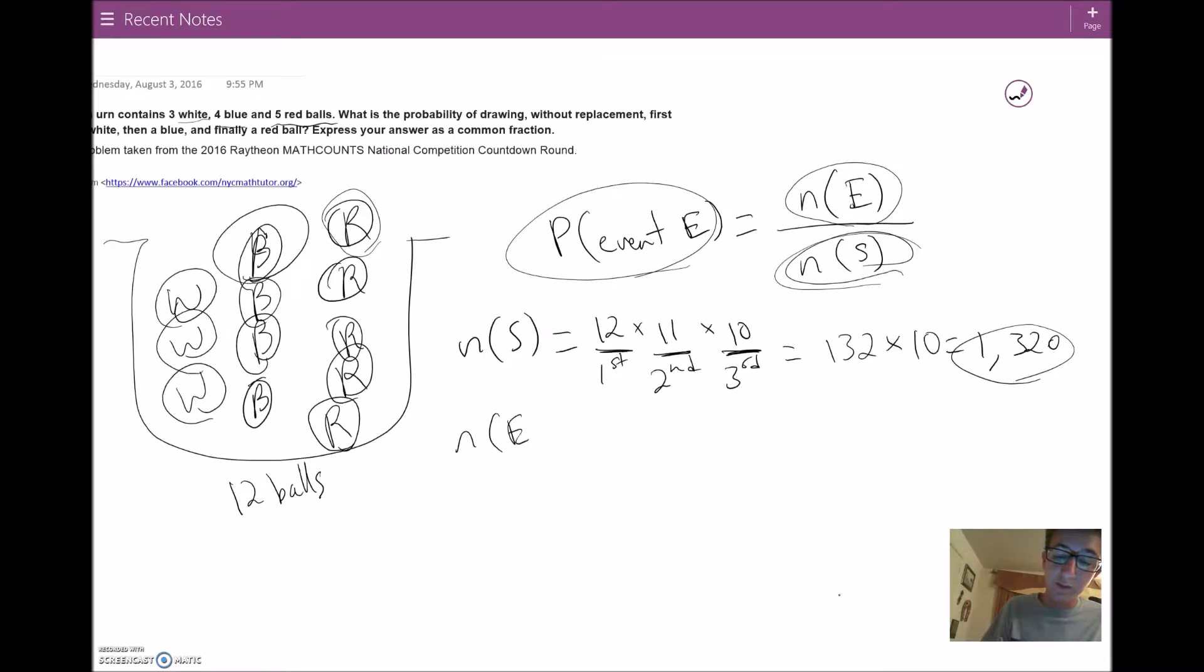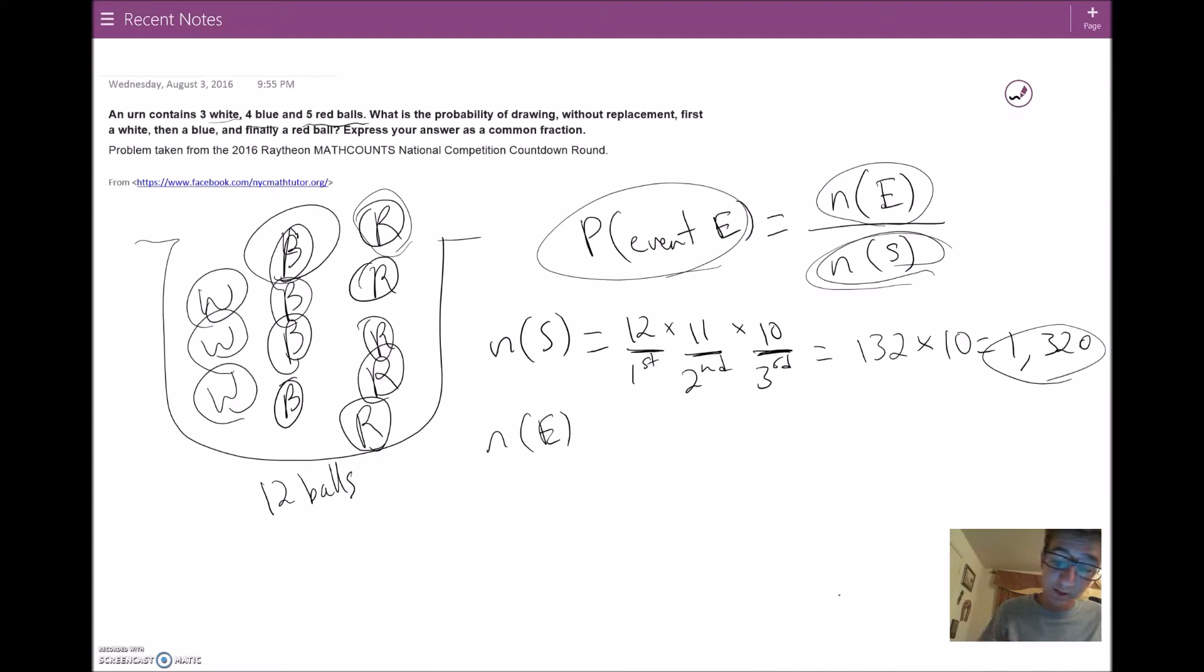Now we're looking at n(E), the event E where we're choosing first a white, then a blue, then a red ball. We're looking at how many ways that can happen. So let's take a look. How many choices do we have for the first ball? Well, not 12 anymore, right? Since first we need a white. How many choices of white balls do we have? One, two, three. So first choice, just three white balls. Now second choice, how many blue balls? We have to pick a blue for the second one. How many choices of blue balls do we have? Four. Good. And for the third one, how many choices of red balls do we have? That's five. We have five choices for the red ball. And yet again, we multiply them, right?